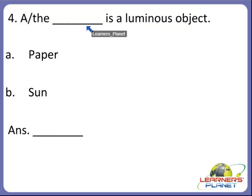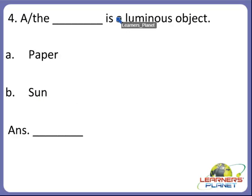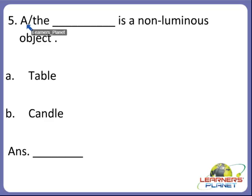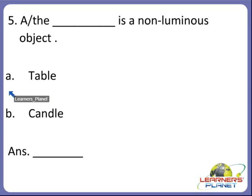A or the dash is a luminous object. Is it A — paper, or B — sun? The sun is a luminous object. So B is the correct answer. A or the dash is a non-luminous object. Which of the following is a non-luminous object? Is it A — table, or B — candle? A table is a non-luminous object. So A is the correct answer.